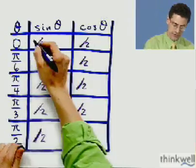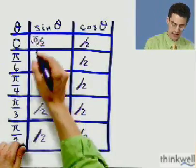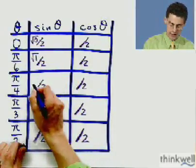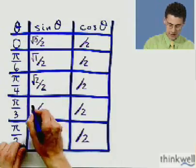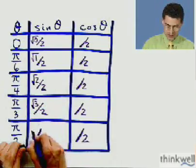So here I'd write square root of 0. Here I'd write square root of 1. Here I'd write square root of 2. Here I'd write square root of 3. Here I'd write square root of 4. What could be easier?